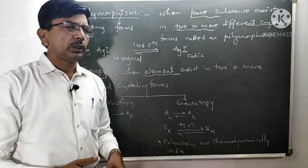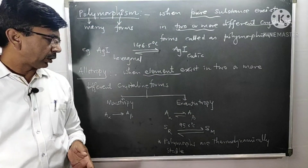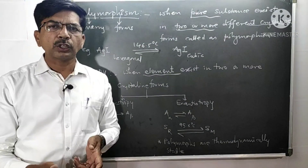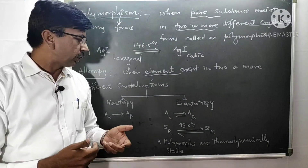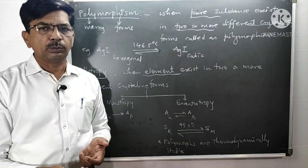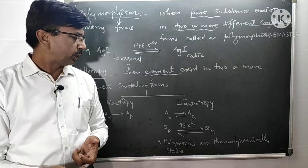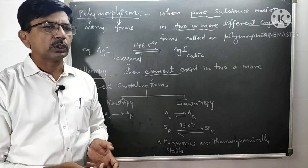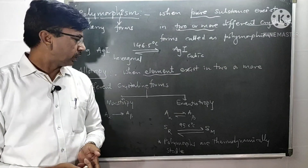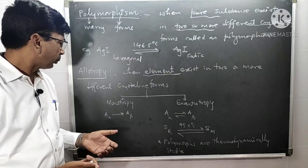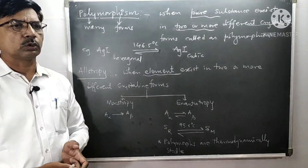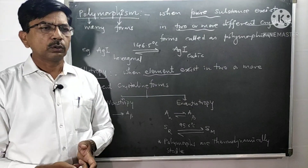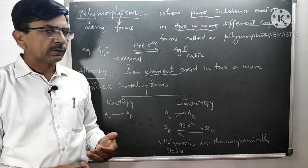With the change in temperature and pressure, a change in the physical form of the substance takes place. This is the case of enantiotropy and monotropy. We'll stop here.